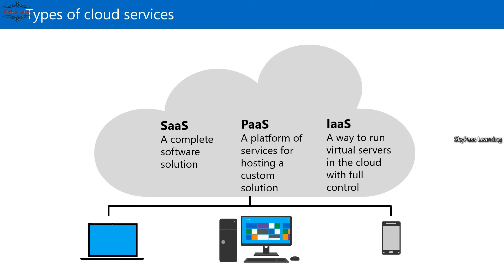The third category is Infrastructure as a Service, or IaaS. Here you get everything apart from the physical hardware — you get a complete virtual machine running on a server. You can install whatever operating system you want, such as Windows or Linux. You can deploy your OS and your applications, and use the server as if it were placed in your own environment or infrastructure.